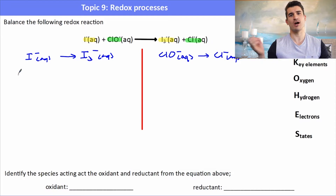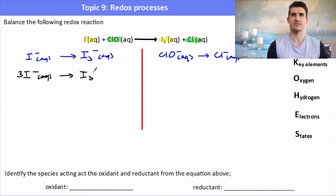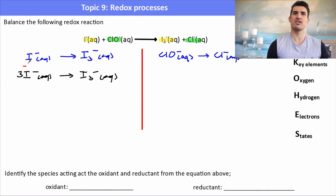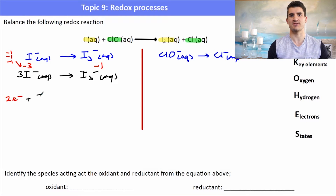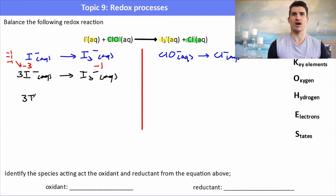Starting with the iodine half equation. Key elements: iodine. On the right I have 3 iodines, on the left I have 1, so I put a 3 in front of the I-. There's no oxygen and no hydrogen to balance. Now for electrons: I have -3 charge on the left (3 negatively charged species) and only -1 on the right. I add electrons to the more positive side — the right-hand side — giving: 3 I- (aq) → I3- + 2 electrons. This is the oxidation reaction.